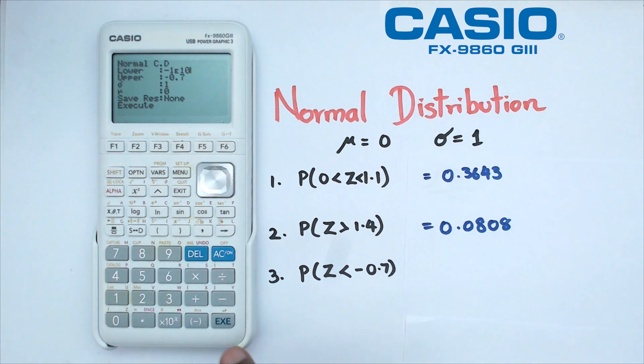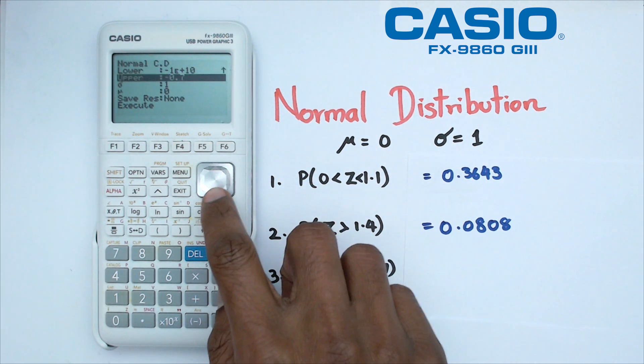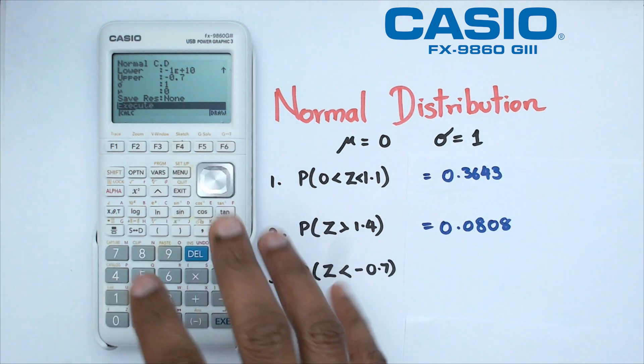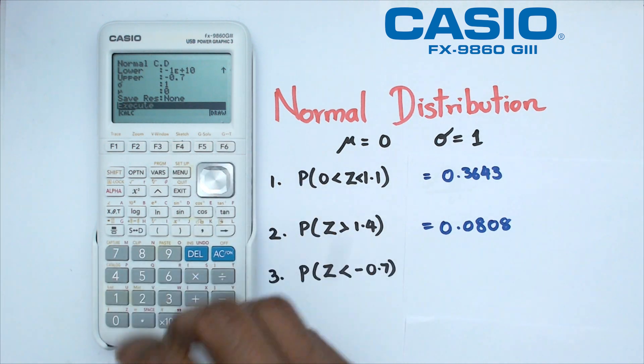So this is going to give you the lower limit there and we're going to click before we click execute we're just going to go into draw. I do like the draw function here because you can see what your questions look like before you actually get the answer.